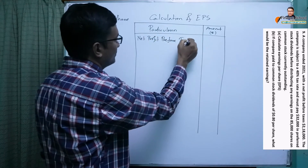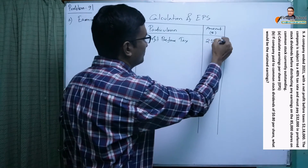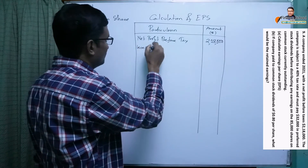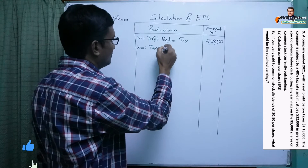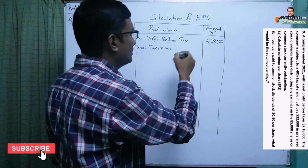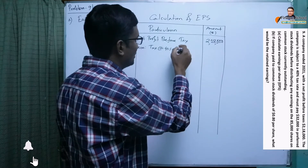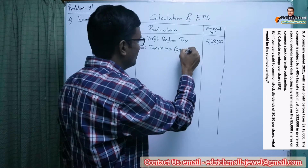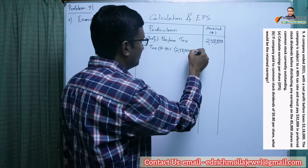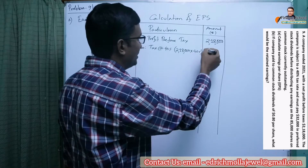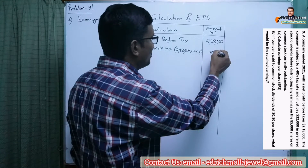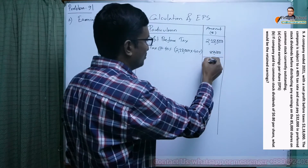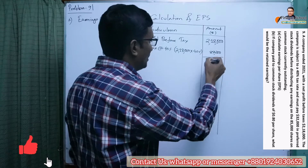Initially we are given net profit before tax, which is $218,000. We then subtract the amount of tax, which is at 40% on $218,000. We can show the calculation in the column: $218,000 multiplied by 40%.